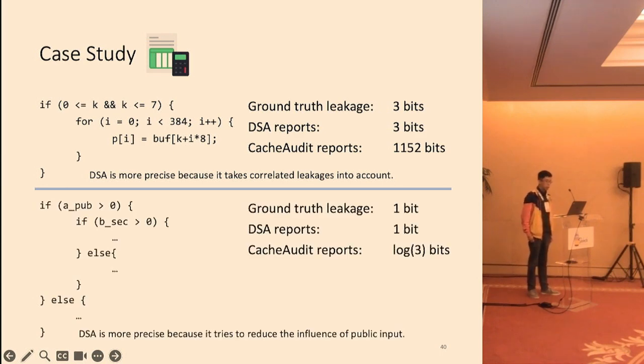In the second example, we have an outer branch that is not sensitive, and an inner branch that is sensitive. Because of the control-flow leakage from the inner branch, one bit is leaked. However, CacheAudit doesn't distinguish public and secret inputs, and instead treats all inputs as secret. They therefore also overestimate.